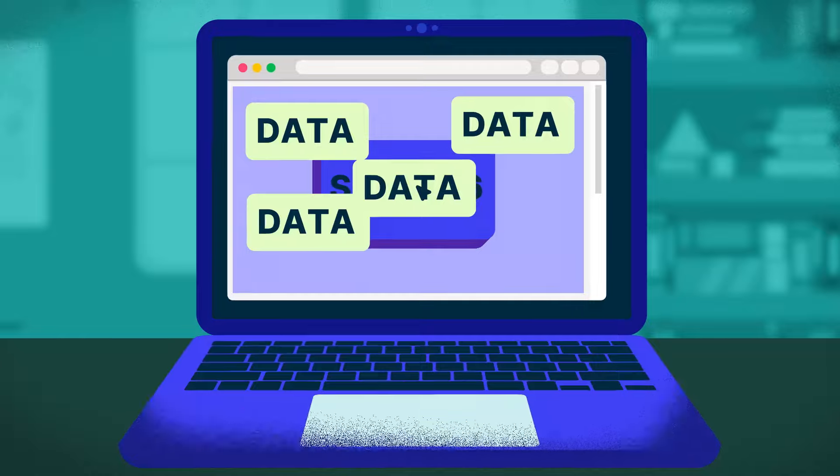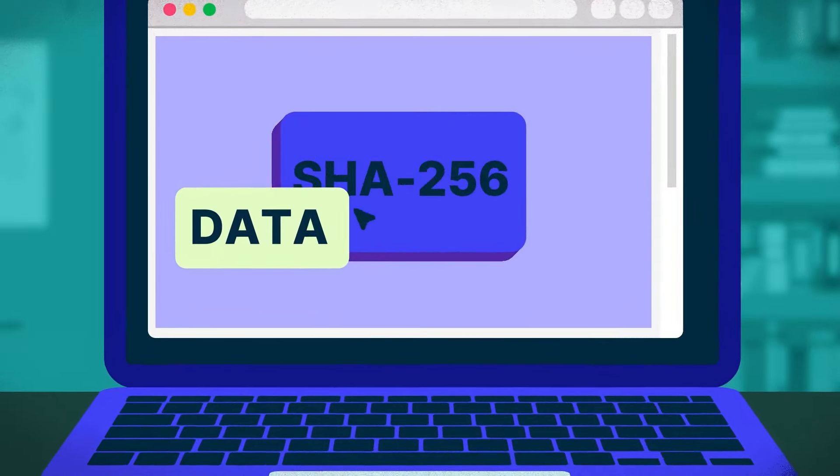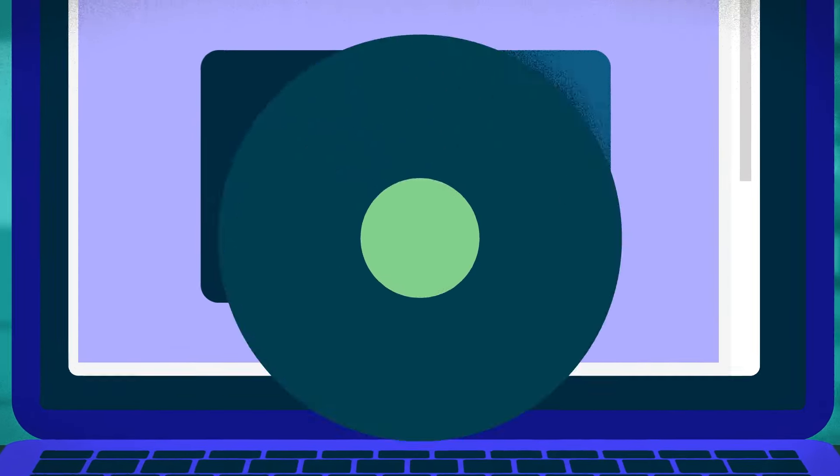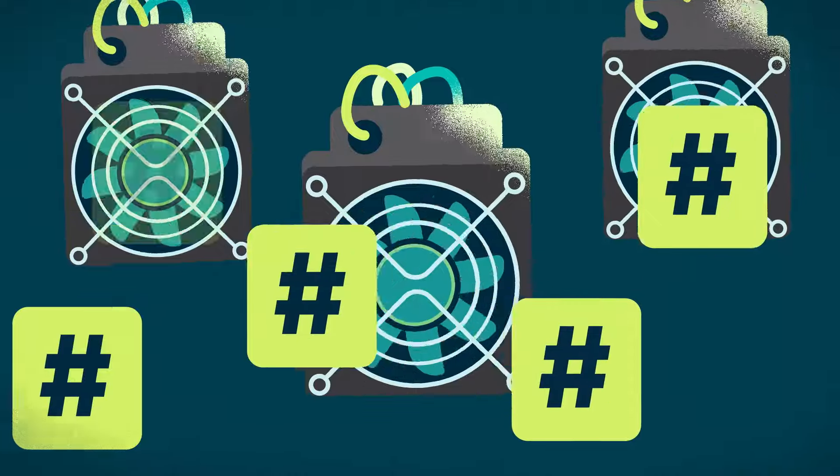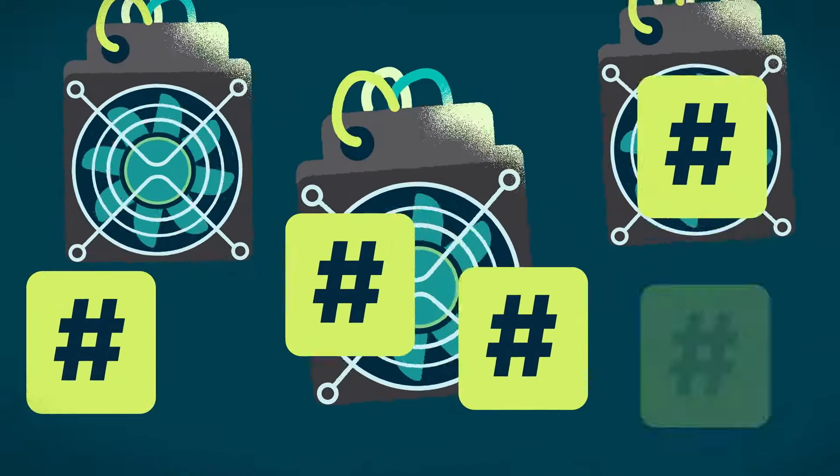In cryptography, a hash is simply a string of characters of a fixed length created by putting data through a mathematical function, and it's easy for a computer to do. The real work in mining thus comes from the sheer number of guessing and hashing needed to reach a valid output.